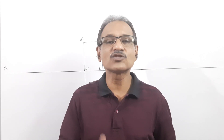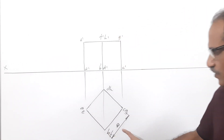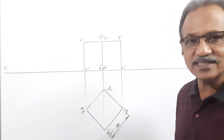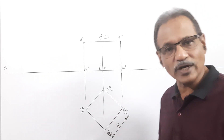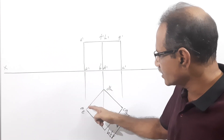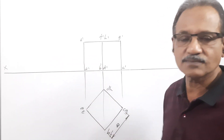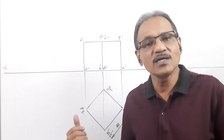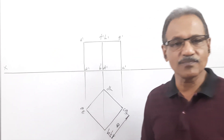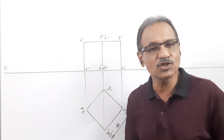The cube is resting on the ground on a corner with the solid diagonal vertical. What is the simple position? All four lateral square faces making 45 degrees to VP — if you extend this, 45 degrees. All four lateral faces making 45 degrees to VP, or you can say all four base edges making 45 degrees to VP.